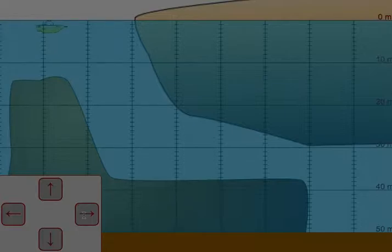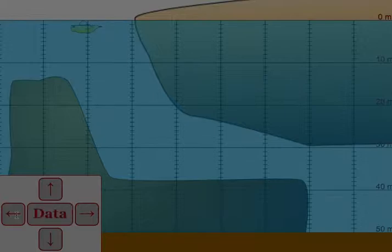The arrows represent velocity, so each time you click the arrow you give your sub a little more speed. It takes speed away using the back arrow, or you could use the back arrow to actually move backwards.